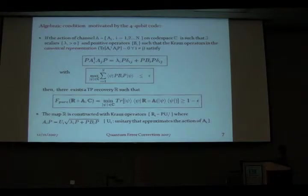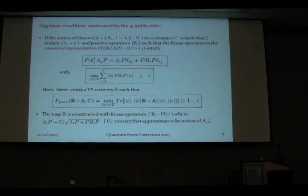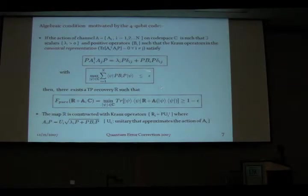The measure I use for worst-case fidelity is essentially a minimization over all pure states of the overlap between the initial state and the final state. The delta_IJ's are telling you that the code space is still being mapped to mutually orthogonal subspaces, but the bi's indicate they are no longer unitary. The bi's are a measure of the deviation from unitarity of the action of the Krauss operators, and we are bounding these bi's from above using the operator norm of the sum of the bi's, so that the total deviation from unitarity is small. We can then show recovery with fidelity bounded by epsilon.